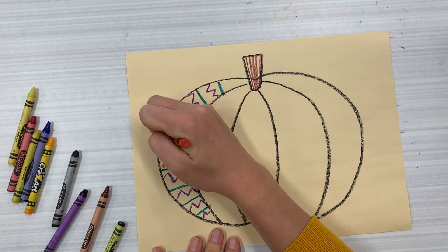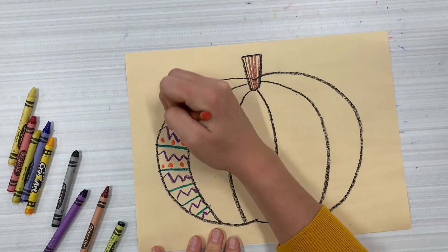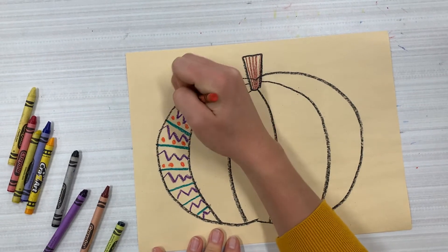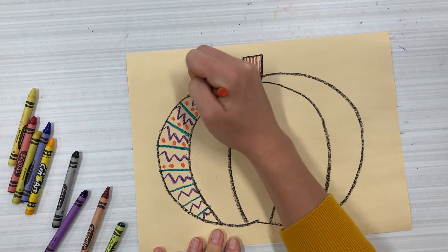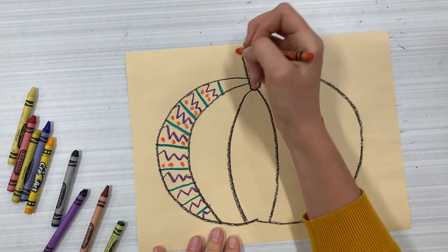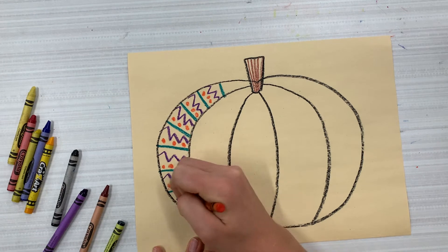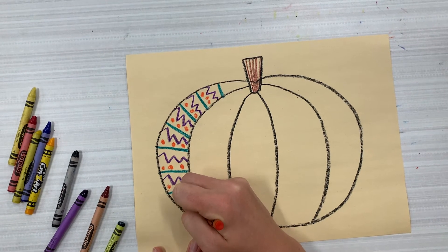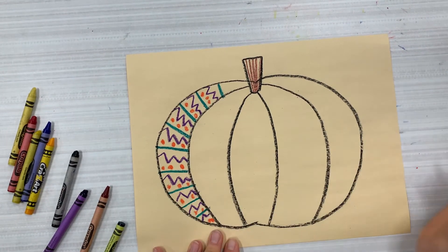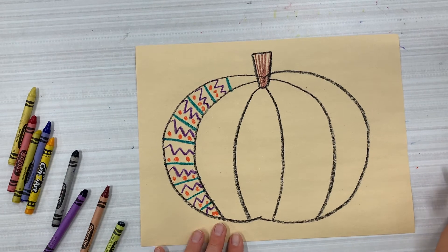As you can see, I am using secondary colors for this first pattern. I want you guys to on your pumpkin have one section at least that uses the secondary colors and one section that uses the primary colors.